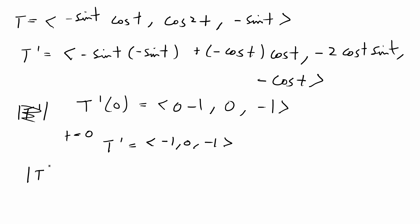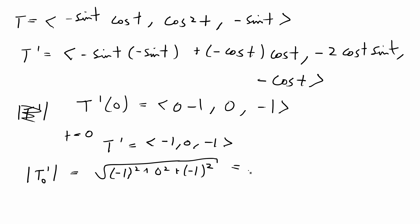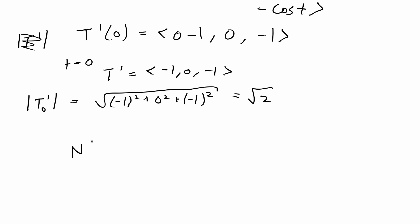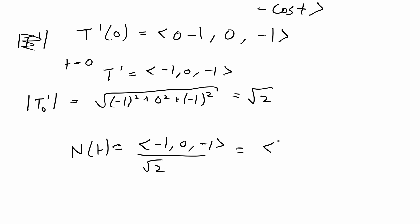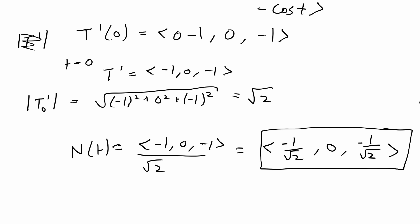Now it's much easier to find the magnitude of T' at t = 0: |T'(0)| = √((-1)² + 0² + (-1)²) = √2. Plugging into our formula, N(t) at t = 0 equals (-1, 0, -1) divided by √2. So the final answer is N = (-1/√2, 0, -1/√2), and we're done with this problem.